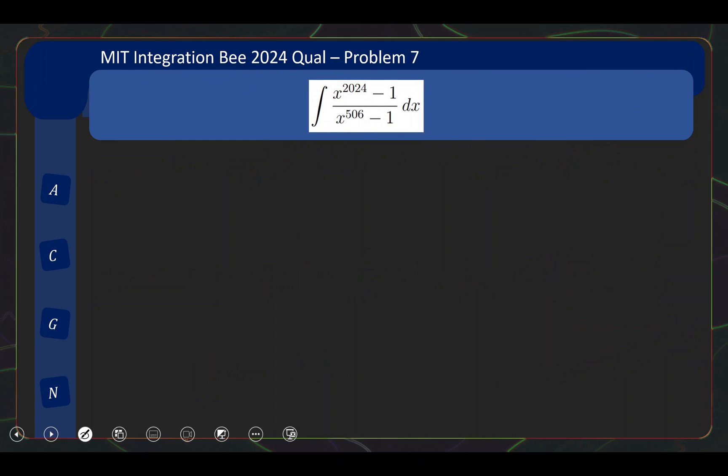Now, let's take a look at problem 7. So problem 7 is quite straightforward. Essentially, you realize that you can write this as (a^4 - 1)/(a - 1), where a is x^506, and here it's just a^3 + a^2 + a + 1. So you can just use this to simplify the integral into the integral of some polynomial, which I'll leave you to evaluate and finish up the problem. There's nothing too deep over here.